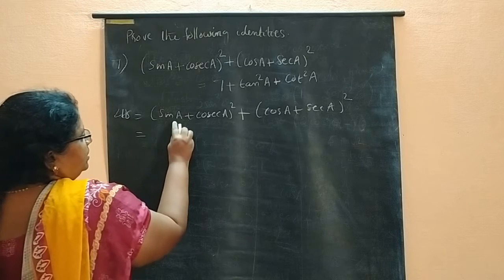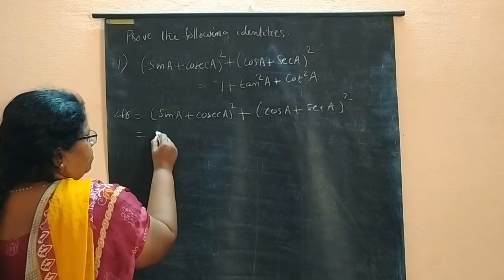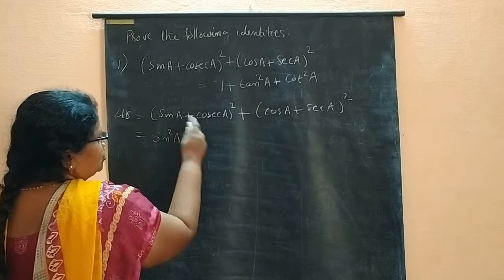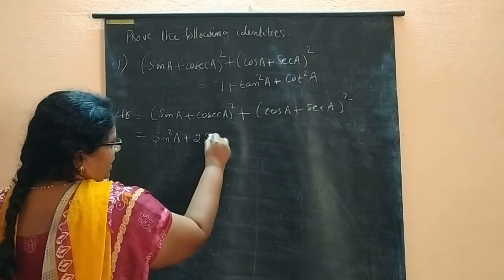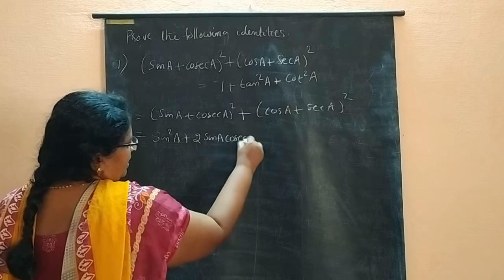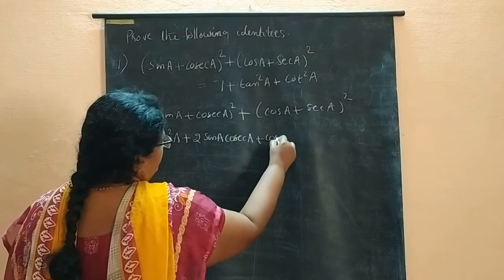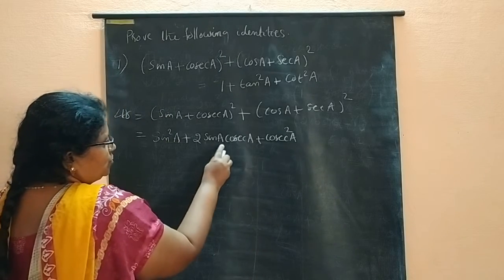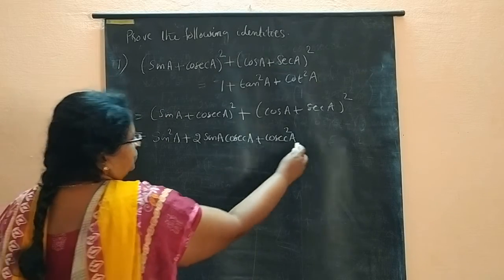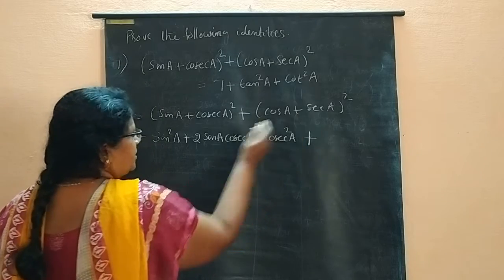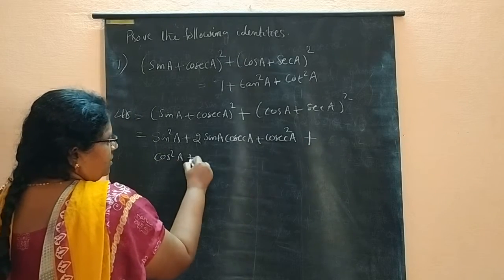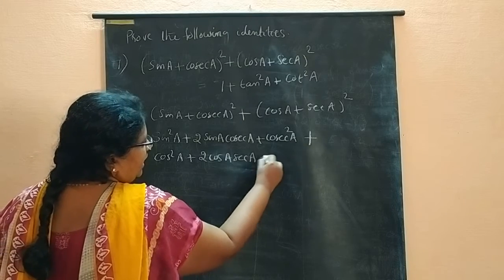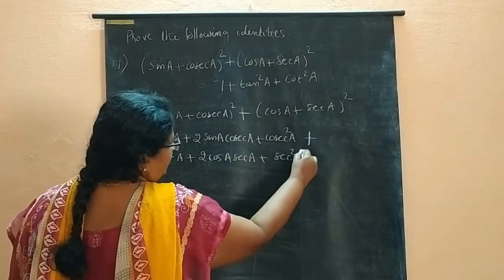So it is equal to sin A plus cosec A whole square. We can write sin square A plus 2 sin A cosec A plus cosec square A. A square plus 2AB plus B square. Plus next one, cos square A plus 2 cos A sec A plus sec square A.